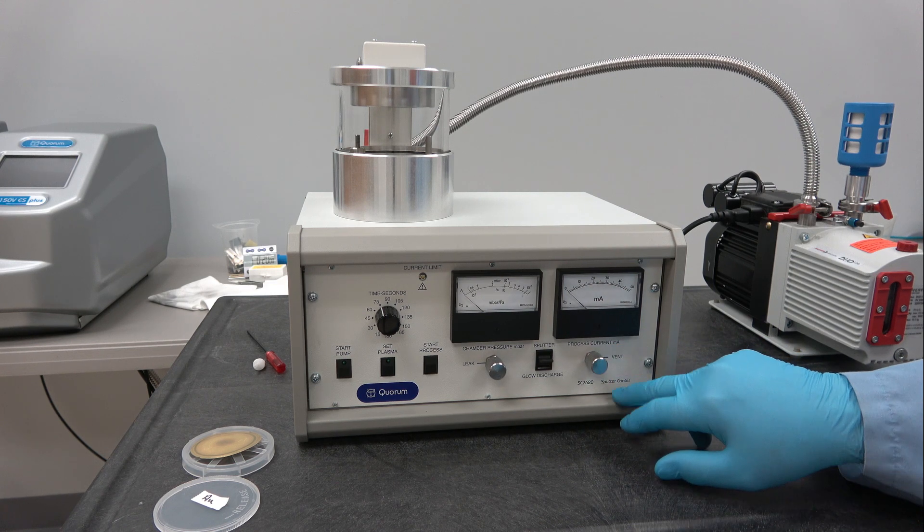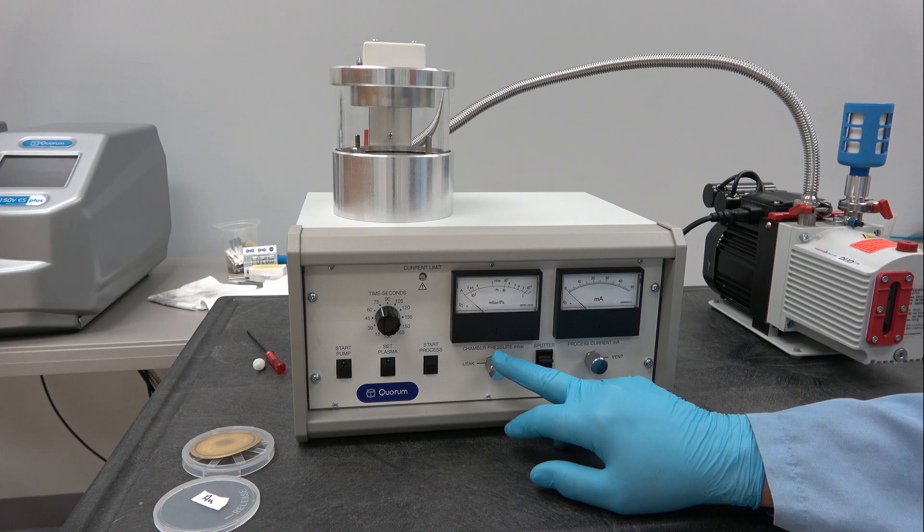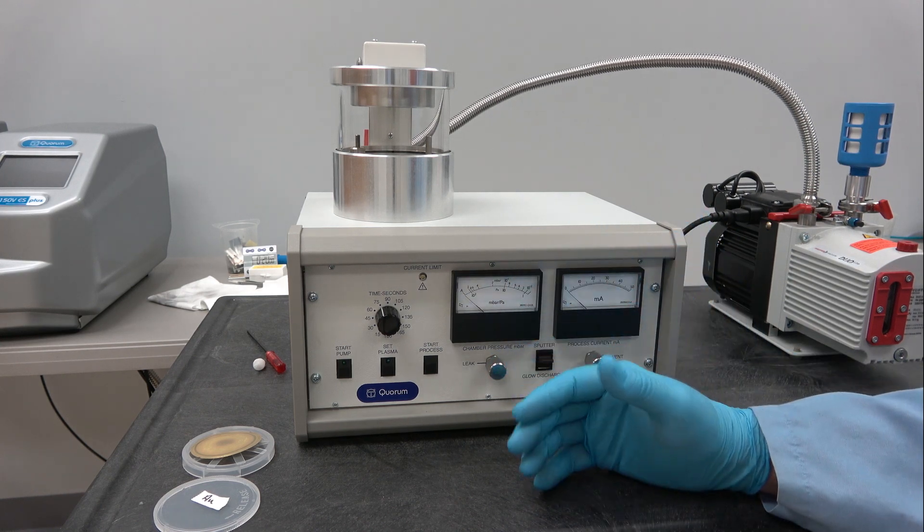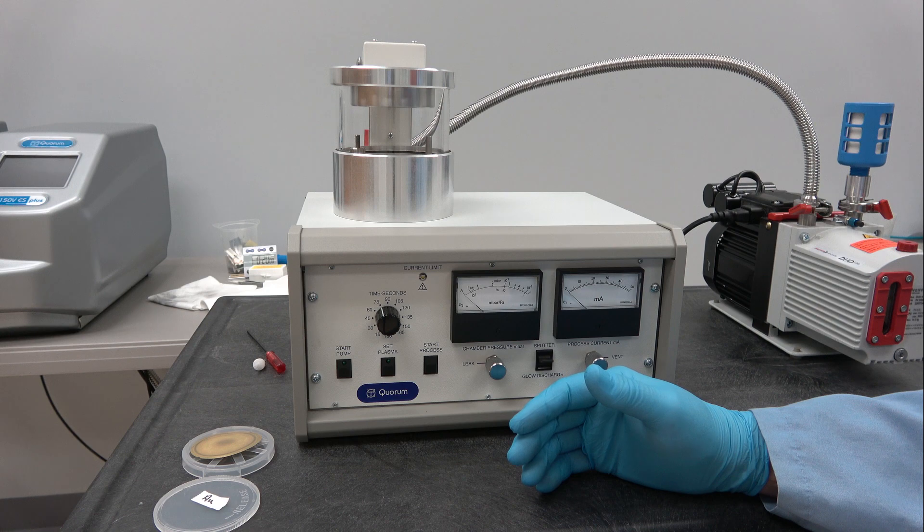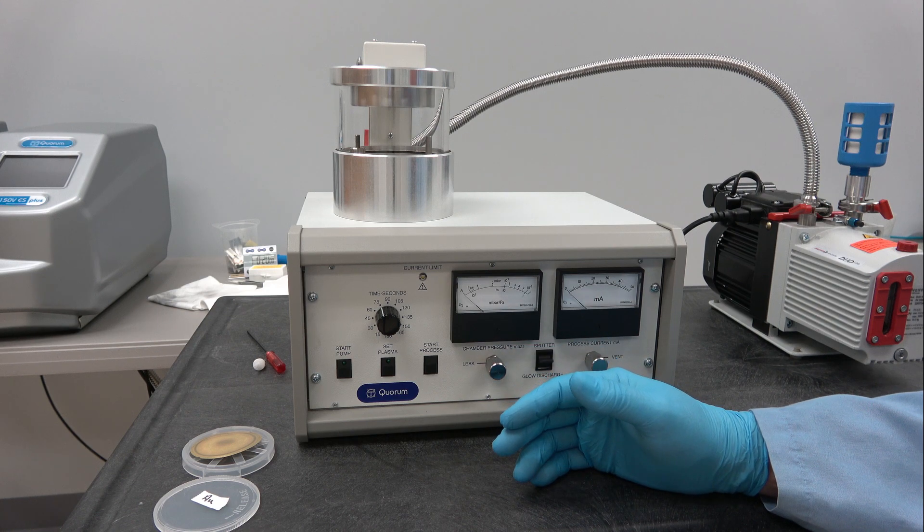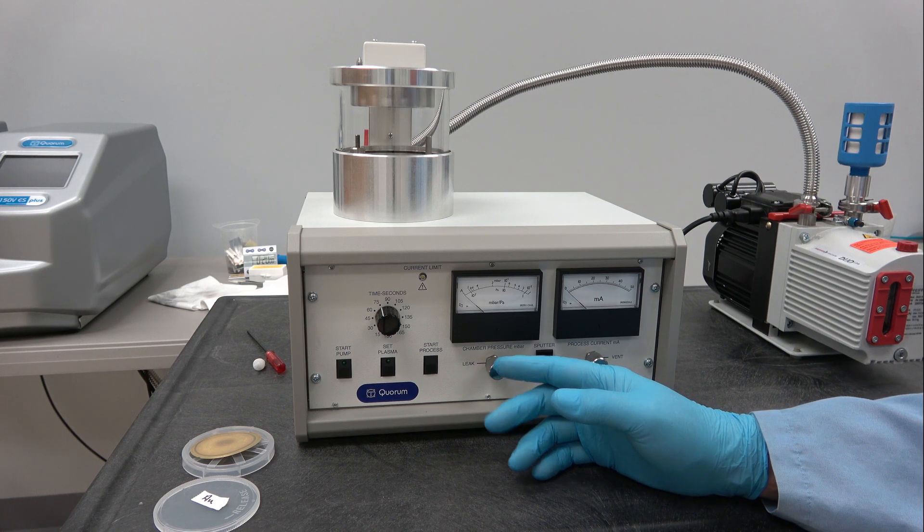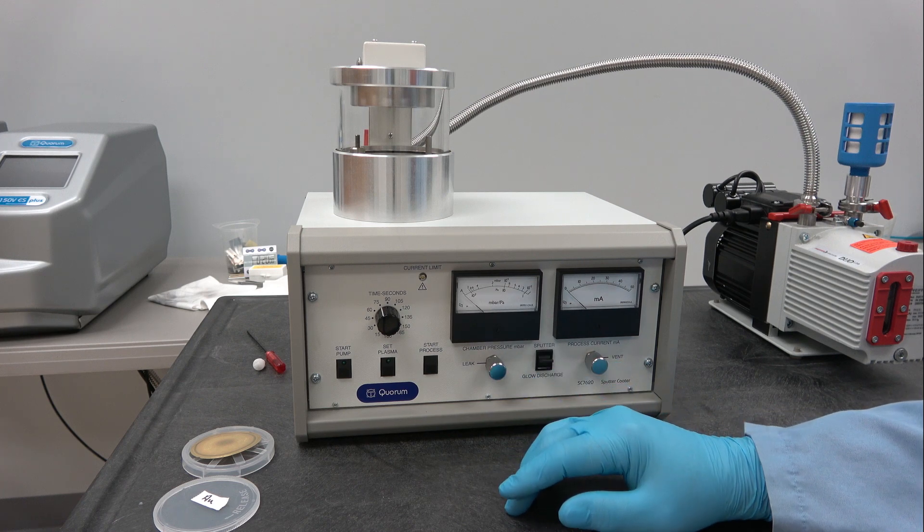Here we have the vent valve and the leak valve. The vent valve is when you want to vent the system at the end of the process after the rotary pump is turned off. The leak valve allows you to set the sputter current.